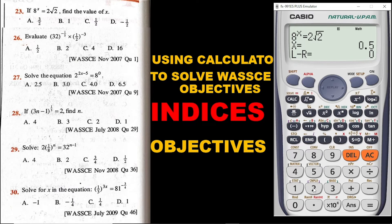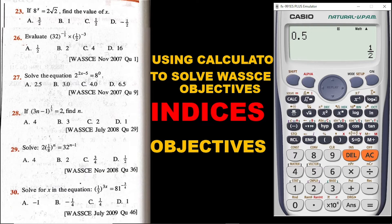We know 0.5 is the same as 1 over 2. If you are not too sure, simply dial 0.5 and then hit the equal sign button — we are getting our answer to be 1 over 2. Going through the possible answers, the right answer is option C. And we are done with this.